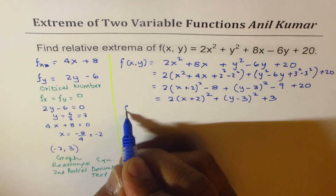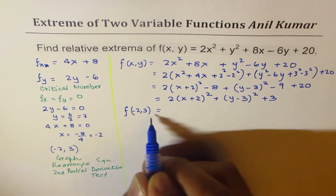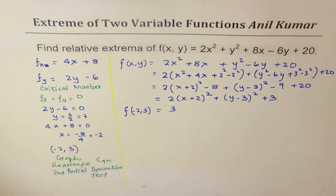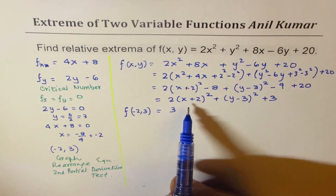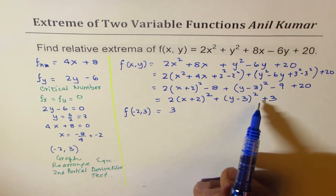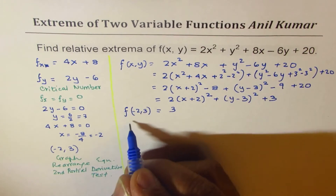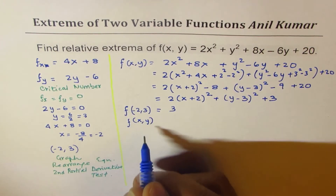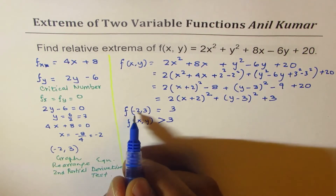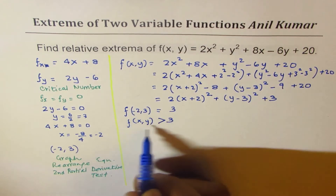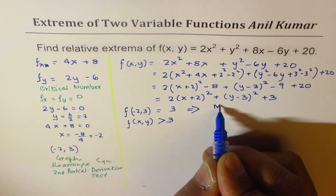You can see that for the point (-2, 3), both squared terms equal zero, so f(-2, 3) = 3. For any other values of x and y, those squared terms are positive, so the function value will be greater than 3. This means (-2, 3) results in a minimum.